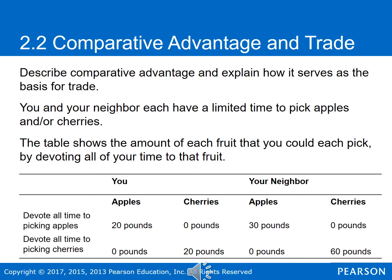If you devoted all your time to picking apples, you could pick 20 apples and zero cherries. If you devoted all your time to picking cherries, you could pick 20 cherries and zero apples. Now your neighbor is better at fruit picking than you — they can pick 30 pounds of apples if they specialize in apples, or 60 pounds of cherries if they focus on cherries.